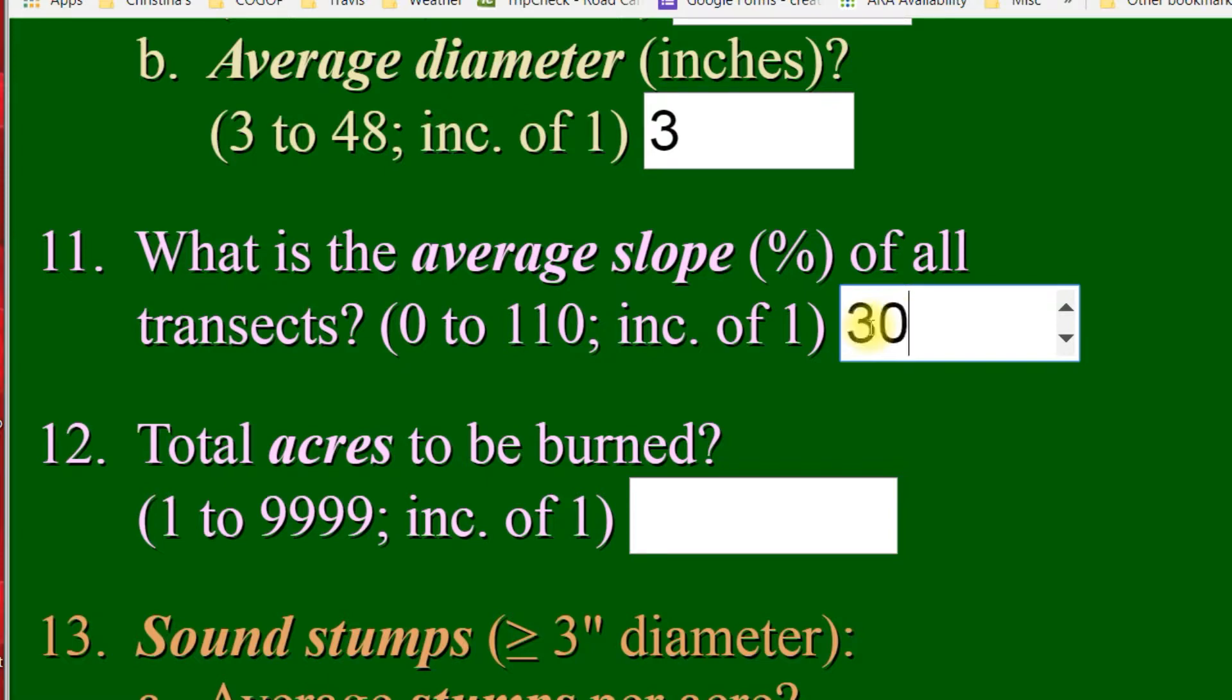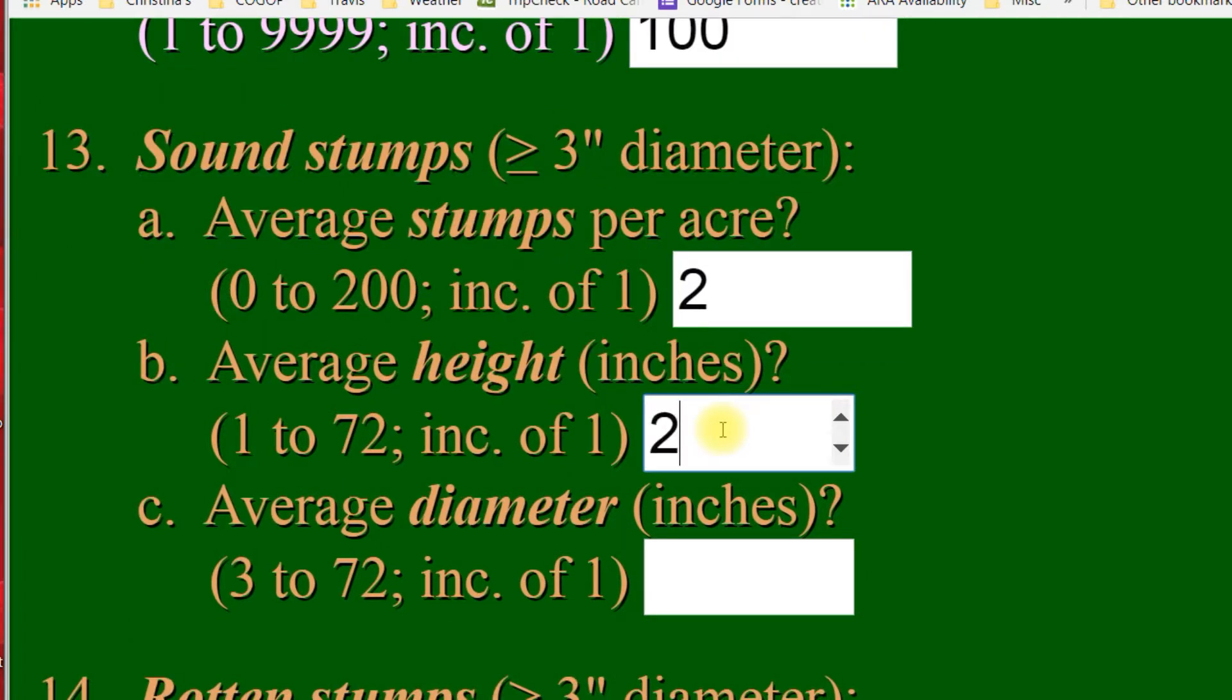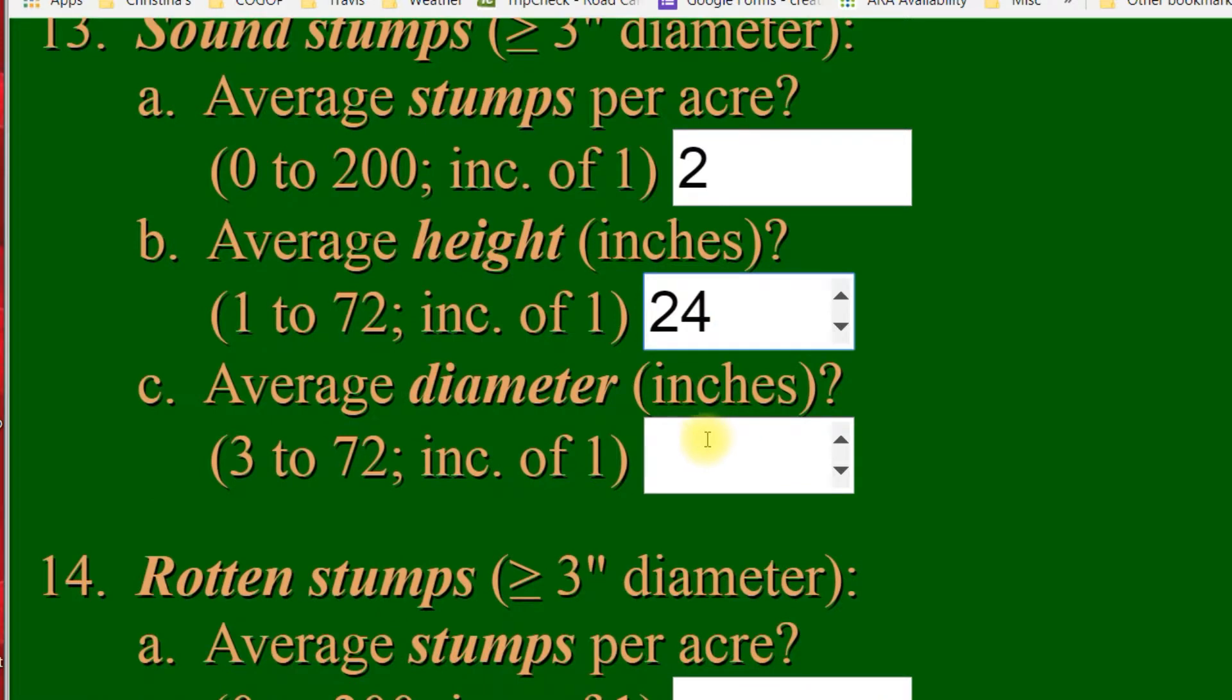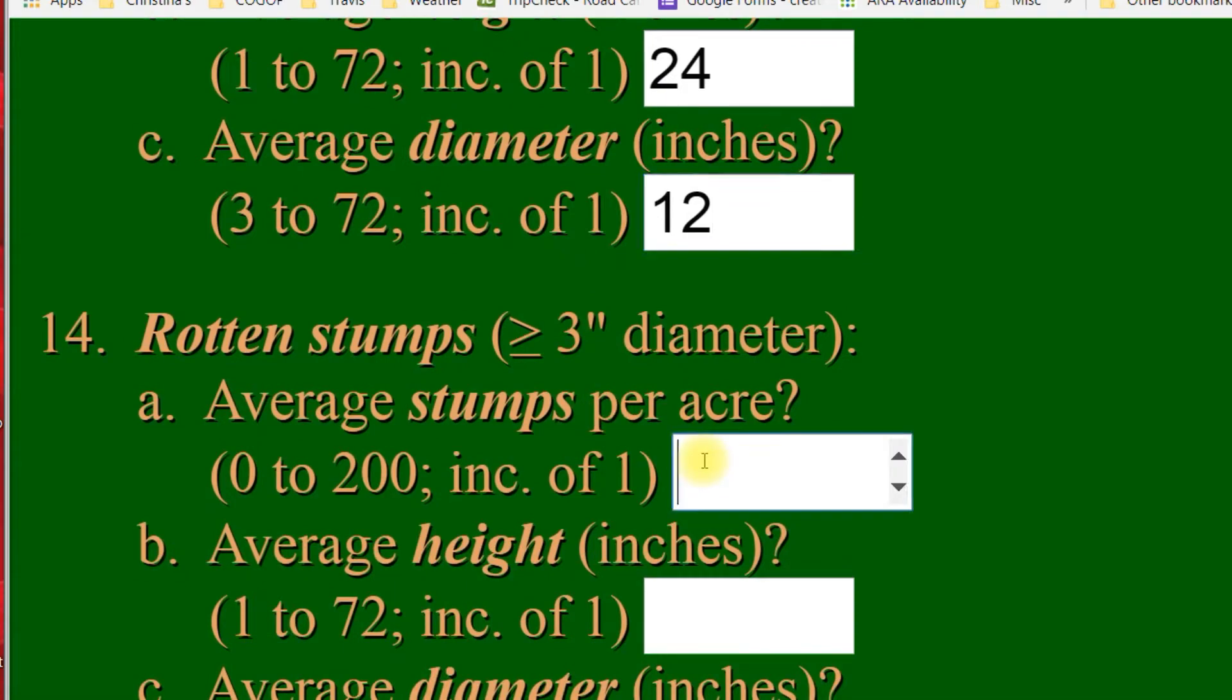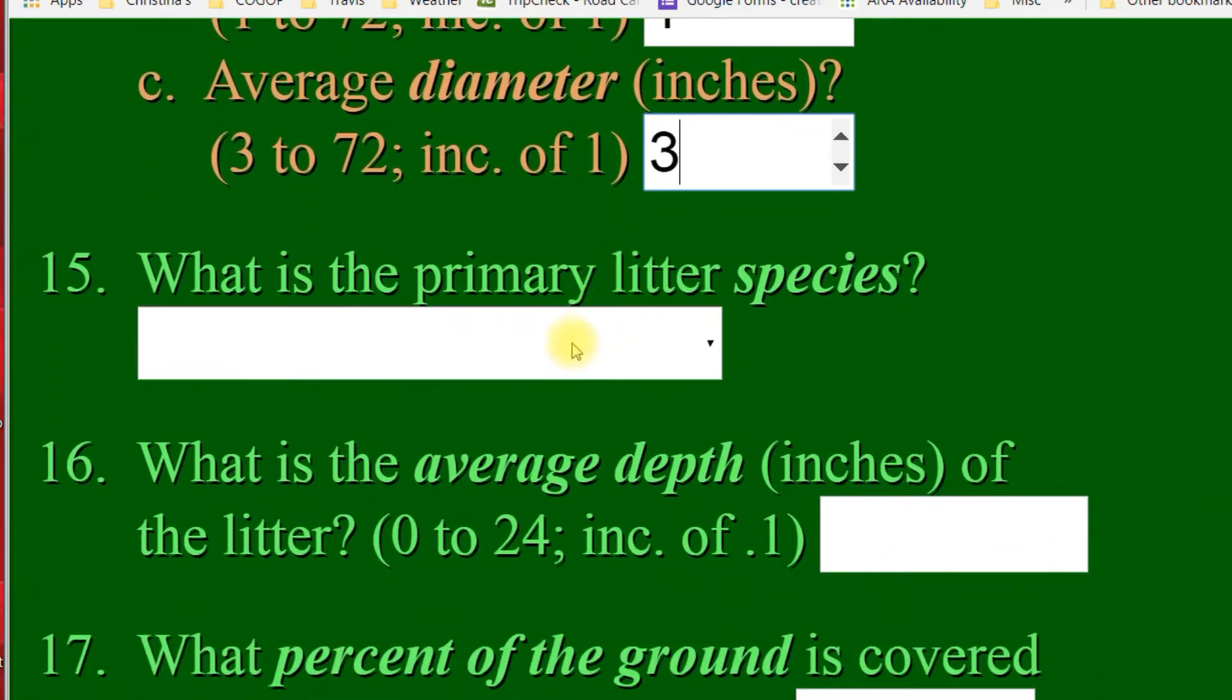The next, I think, are pretty intuitive. What's your average slope? Let's say we got a 30% slope here. How many acres are you going to burn? Let's say 100. And then it asks for stumps. The same thing as before. How many stumps per acre? What's the average height of those stumps? Let's say they're 2 feet. Oh, that one's inches, 24. And the average diameter, also in inches. Let's say they're 12. Again, putting those numbers in because of what they're asking, but it's going to multiply it by 0.